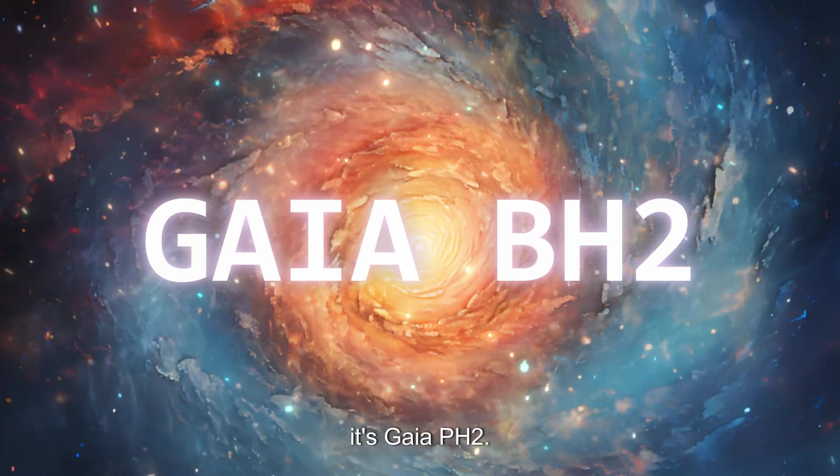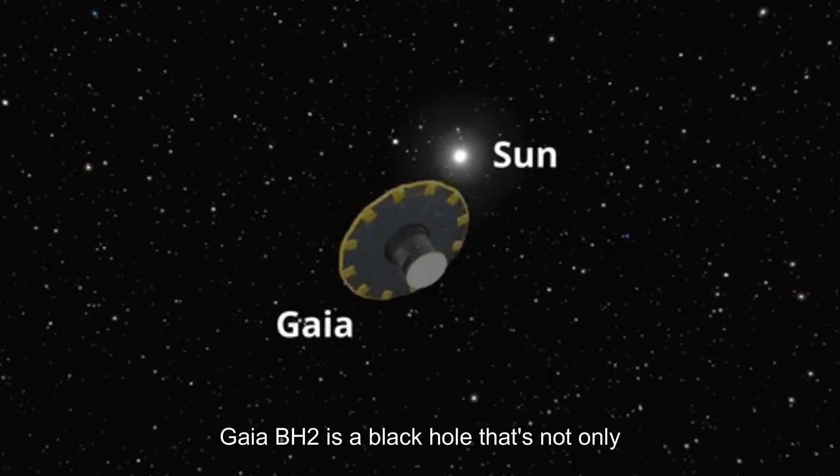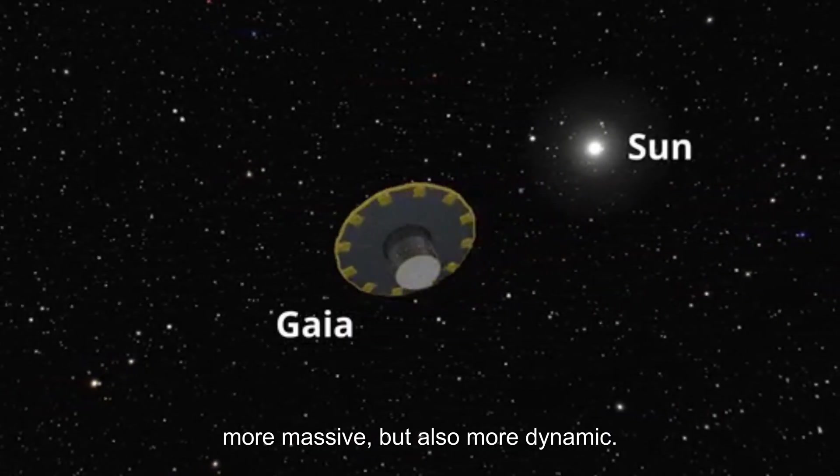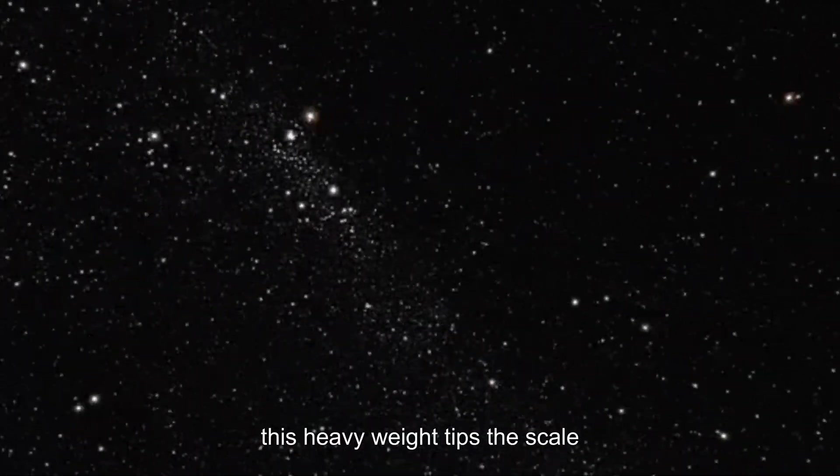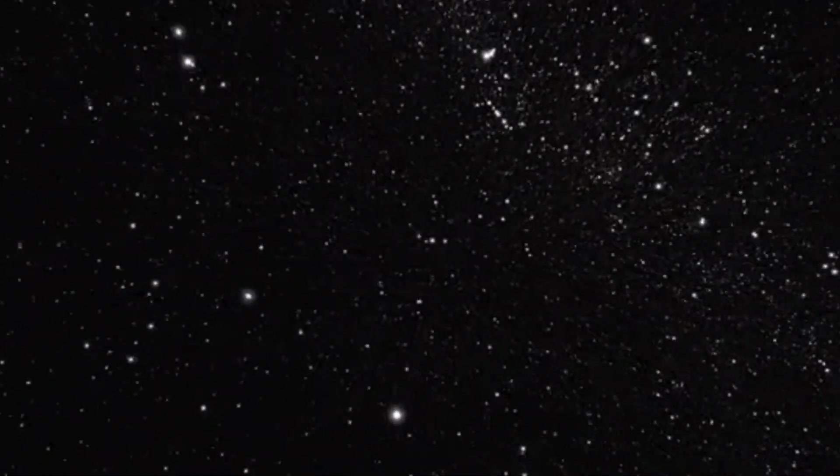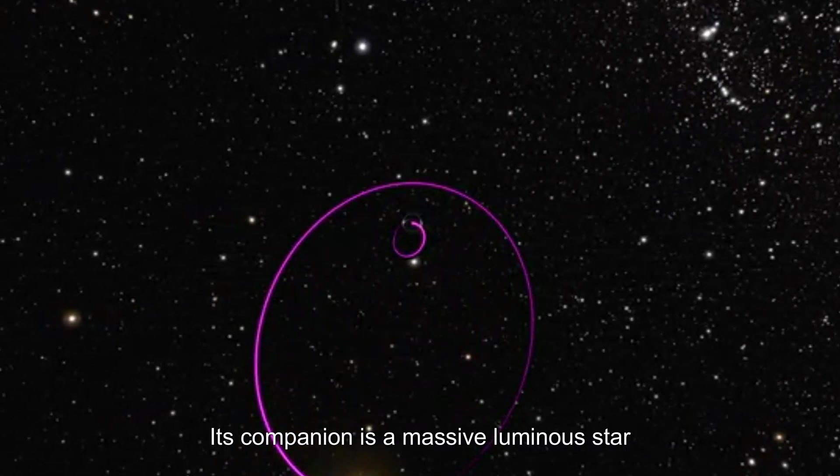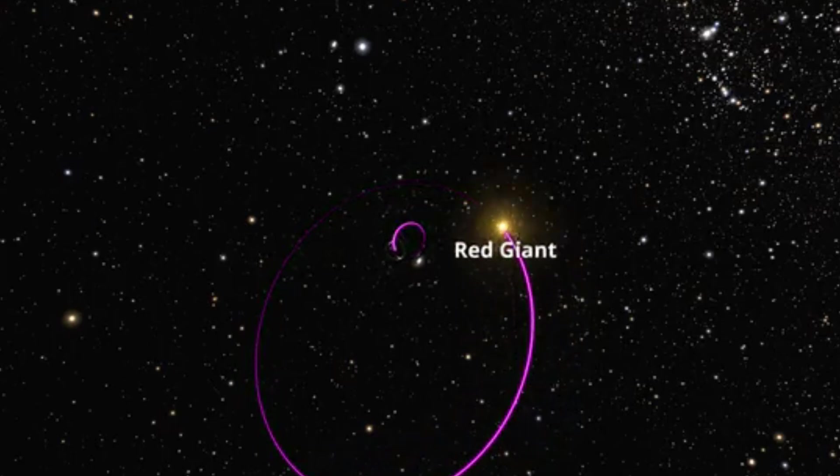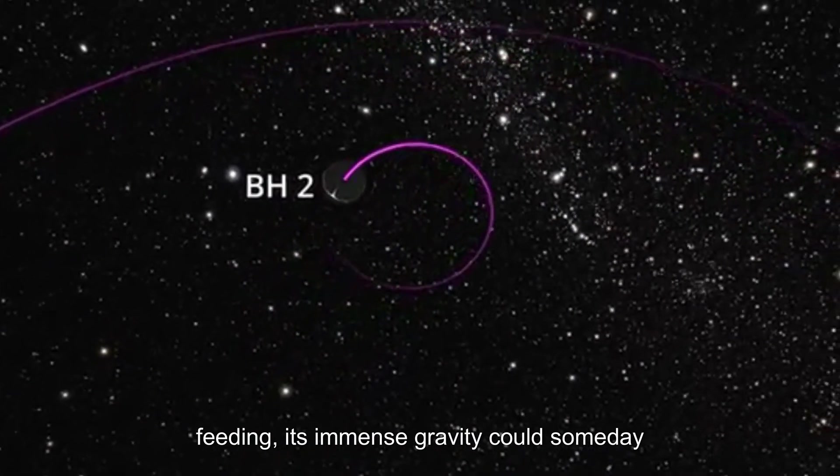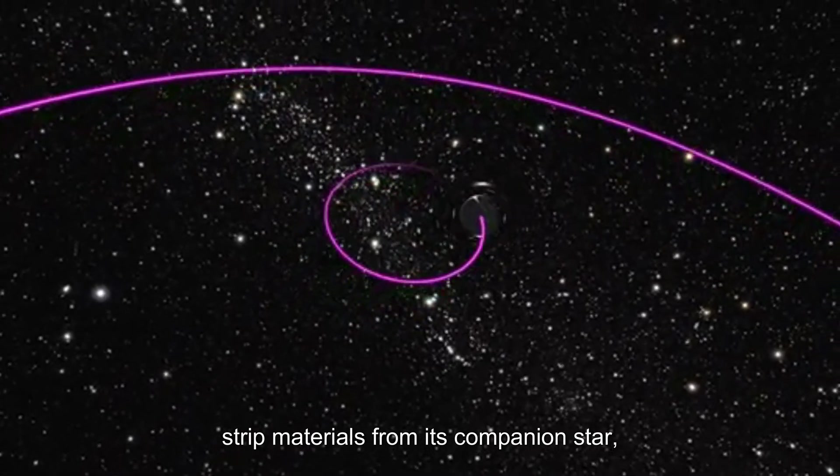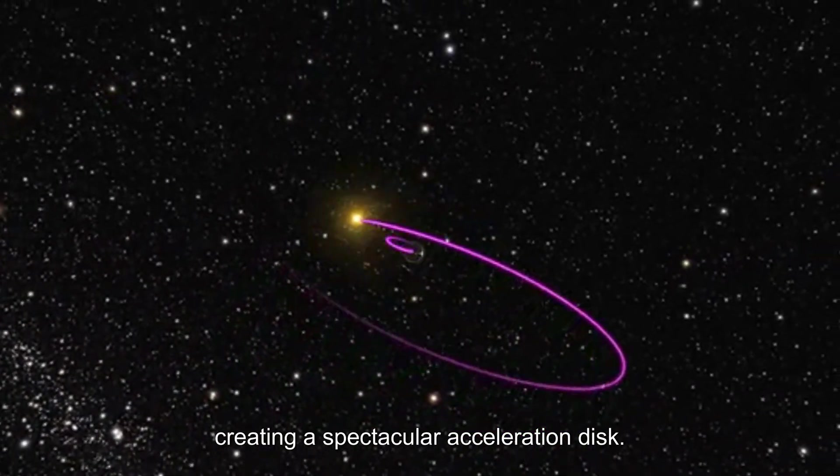But for now, we have to live with Gaia BH1. I'm sure you've guessed the name of our second black hole also—yeah, it's Gaia BH2. Gaia BH2 is a black hole that's not only more massive but also more dynamic. Located 1,600 light years away, this heavyweight tips the scale at 10 times the mass of the sun. Its companion is a massive, luminous star locked in a high-speed orbit. Although this black hole isn't actively feeding, its immense gravity could someday strip material from its companion star, creating a spectacular accretion disk.